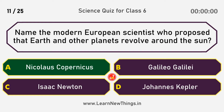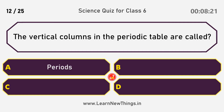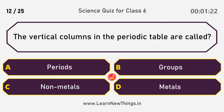Nicholas Copernicus. The vertical columns in the periodic table are called Groups.